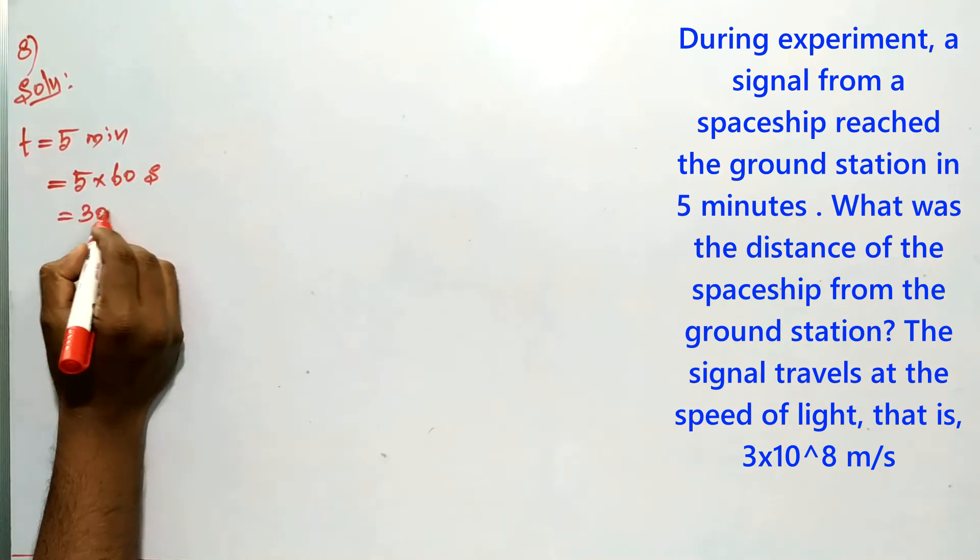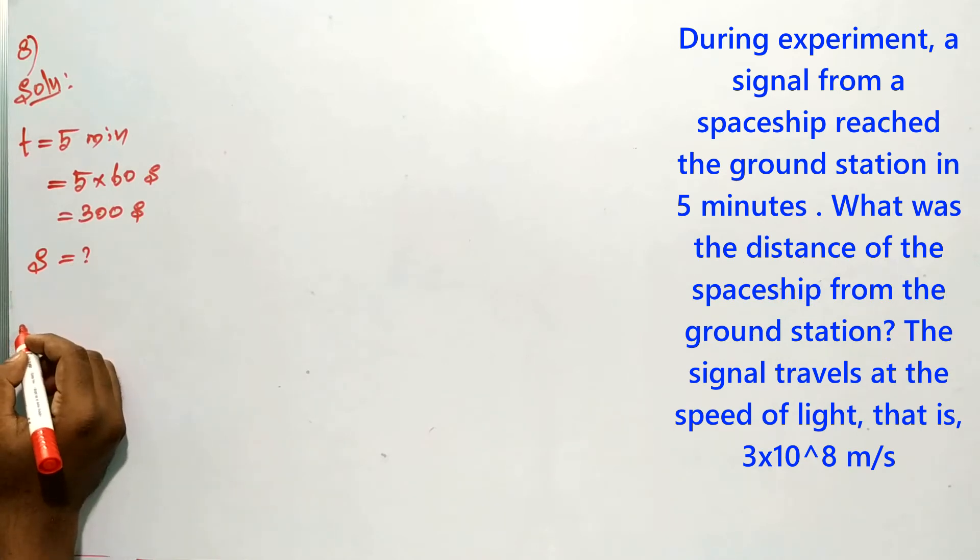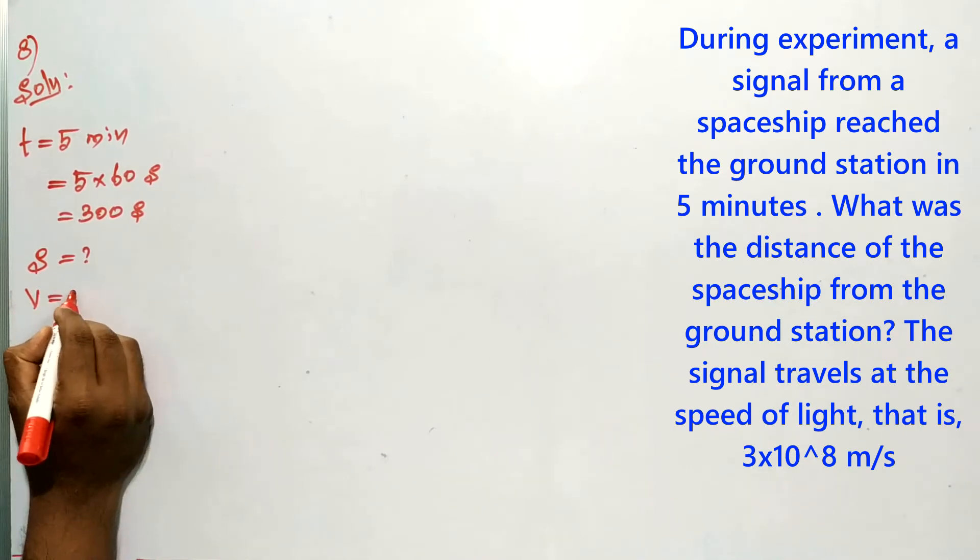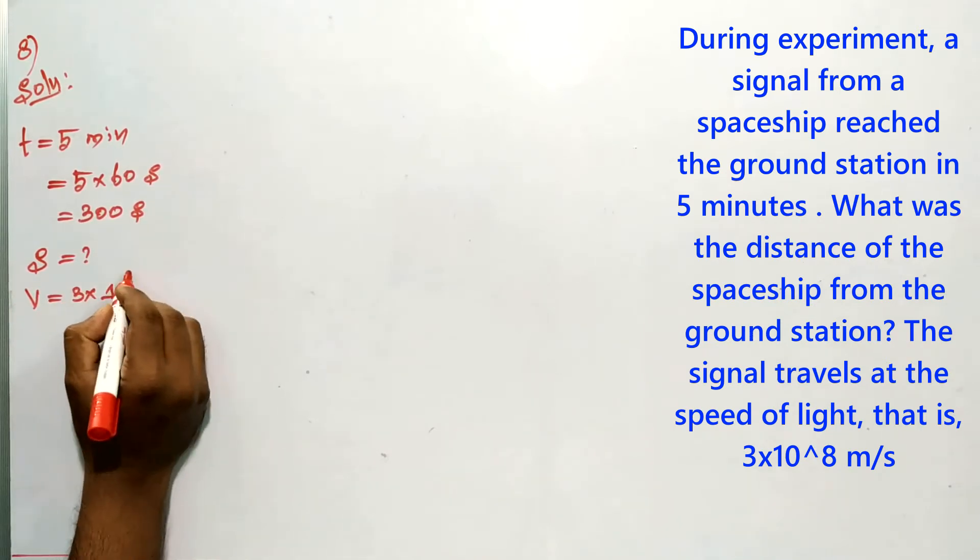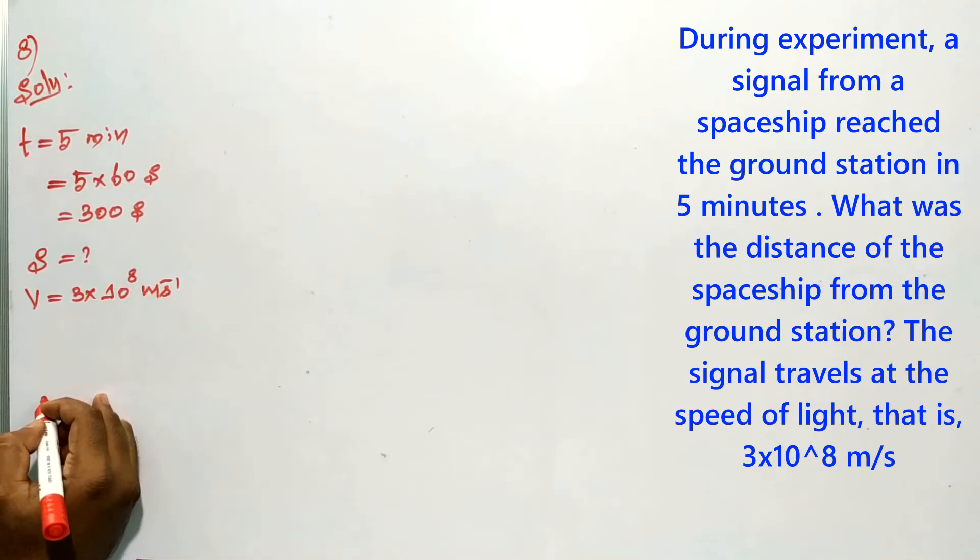What was the distance? They're asking for distance. The velocity of light is given: 3×10^8 meters per second. Here we have a simple formula: speed equals distance by time.